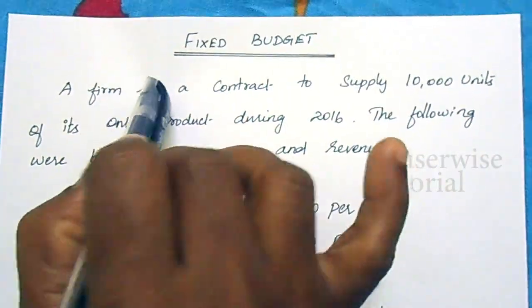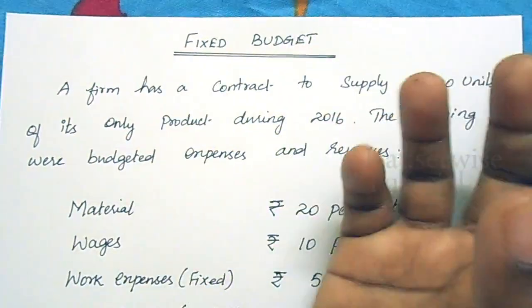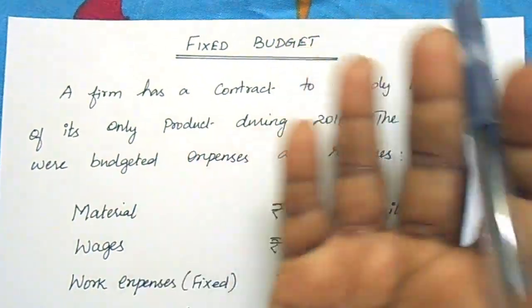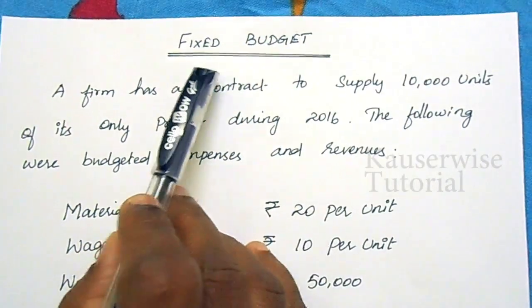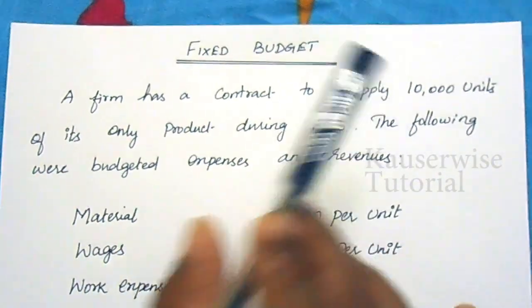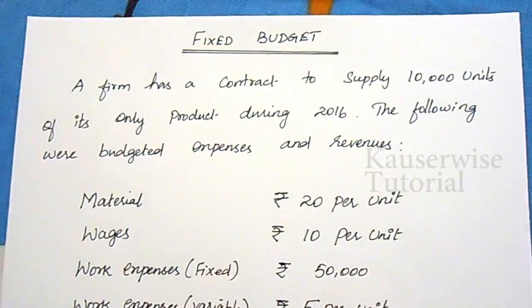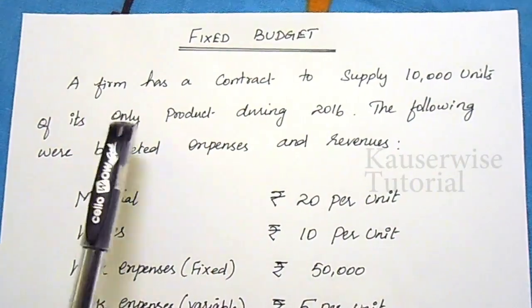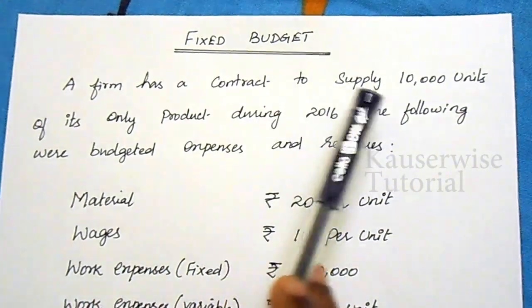This budget is fixed in nature and is prepared based on one assumption: that the future is static. It is used only in concerns where future conditions are likely to be static. Now let us go for the problem.